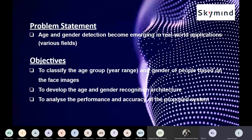I'll start with the problem statement. Age and gender detection is becoming increasingly important in real-world applications such as security control, forensics, entertainment, and many others. For example, there are restrictions or age limitations used to control the contents of watched media, which is one reason why we need this kind of detection.